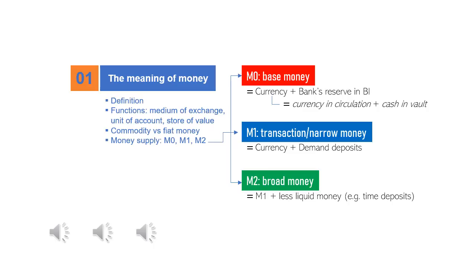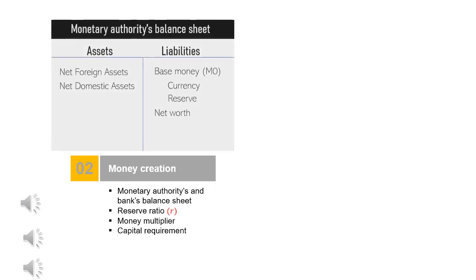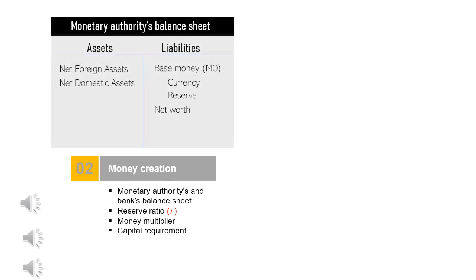Since M1 includes demand deposits, whenever more loans and thus more deposits are made, it means more money will be available in the economy. On the other hand, M2 or broad money is certainly bigger than both M0 and M1. It is M1 with the addition of less liquid money such as time deposits. M2 is also used especially when policymakers would like to see the connection of money to real economic variables.